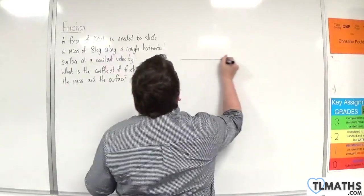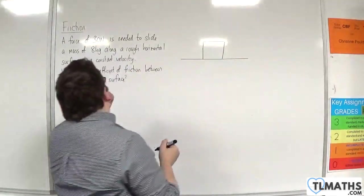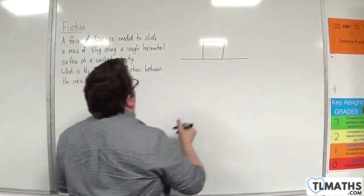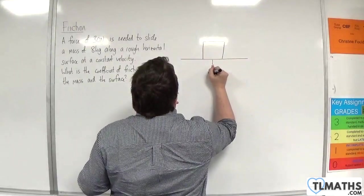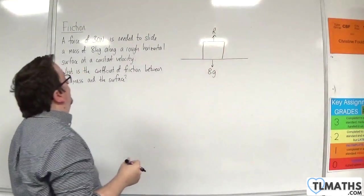Let's draw a diagram. Here is my block, or my mass, and it has a mass of 8 kilos, so it has a weight of 8g. It is in contact with the surface, so the normal reaction force is R.